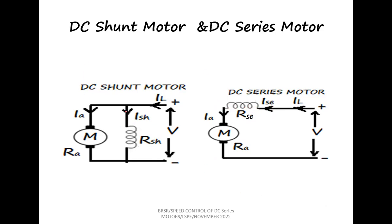For changing the field current alone in a shunt motor, we can introduce a rheostat in the field circuit. By varying the value of the rheostat, the current through the field can be changed. But in the case of a series motor, if a rheostat is included in series, the current through the field will change and the current in the armature will also change. So if we want to change the current through the field of a series motor alone, we have some methods.